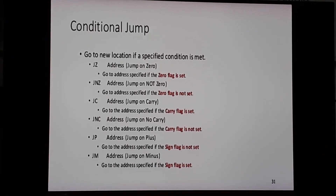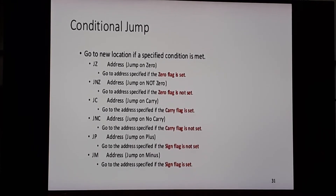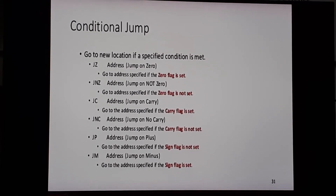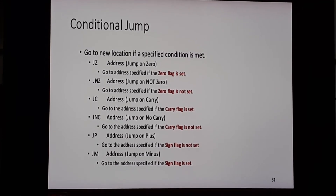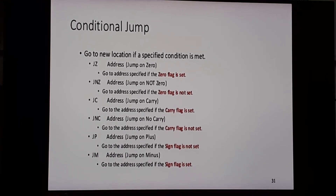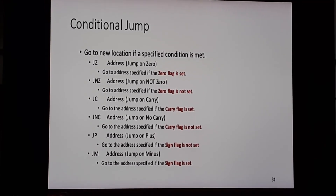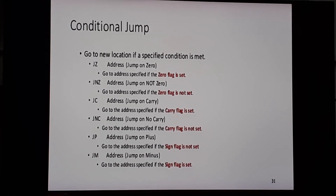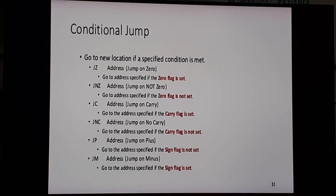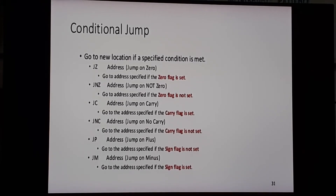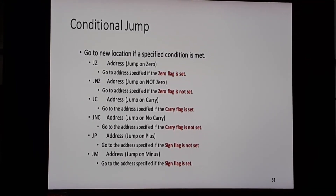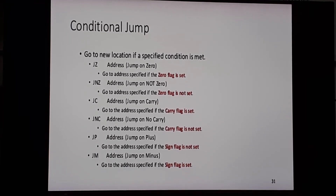JC stands for jump on carry — JC address means the instruction will take a jump only if the carry flag is set to 1. JNC stands for jump if no carry, meaning it will take a jump if the carry flag is reset or not set. JP address means jump on plus — this instruction will take a jump if the sign flag is not set to 1, which means a positive number. JM stands for jump if minus — it will jump if the sign flag is set to 1, meaning a negative number.